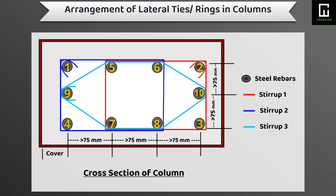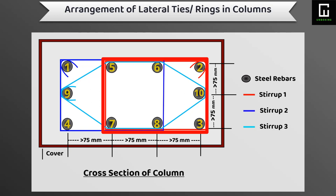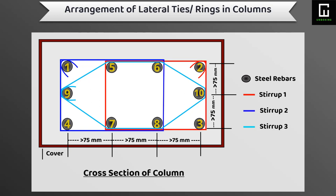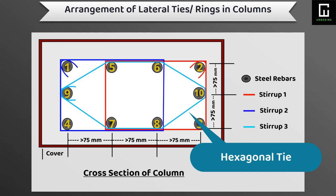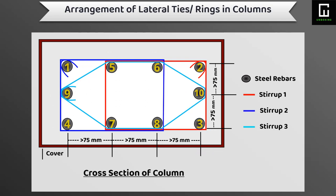Bar numbers one, five, six, eight, seven, four, and nine are connected with one regular size stirrup. Similarly, bar numbers five, six, two, ten, three, eight, and seven are connected with another regular size stirrup. As the cross-sectional size is more than 225 mm in length and more than 150 mm in width, we also have to provide a hexagonal type of stirrup connected with bar numbers five, six, ten, eight, seven, and nine.